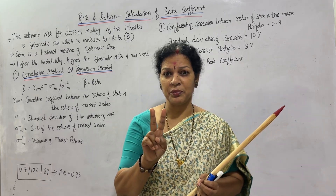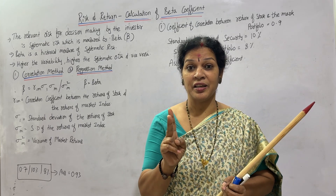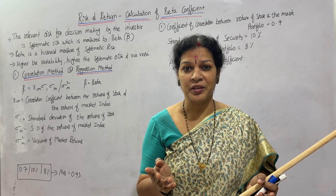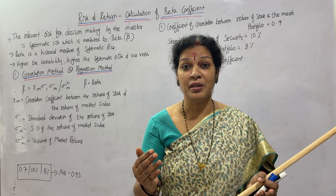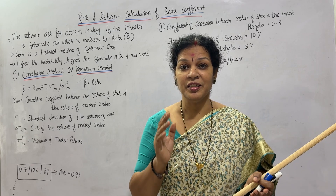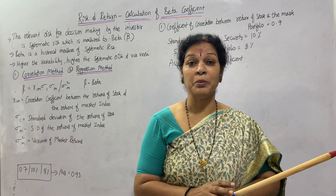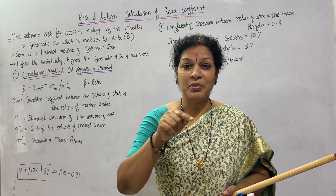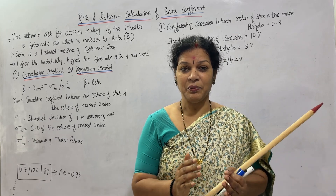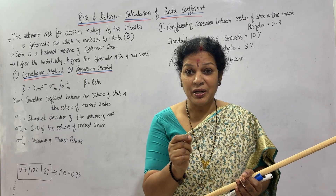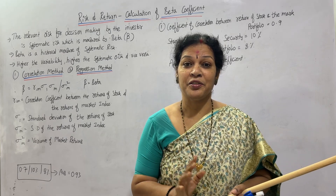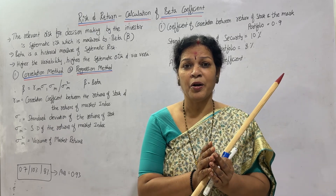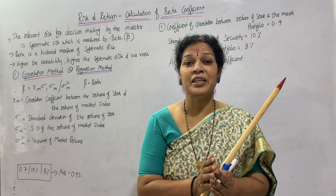Remember that we always have two types of risk. One is certain risk and uncertain risk. Uncertain risk means it is not in our hands — we can't do anything, anything can happen. It is unmeasurable. Whereas if you talk about measurable risk, that is certain risk. We are going to talk about measurable risk only. Certain risk can be calculated; uncertain risk, we cannot calculate.